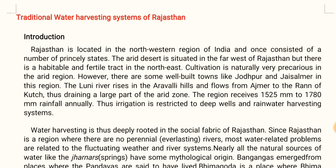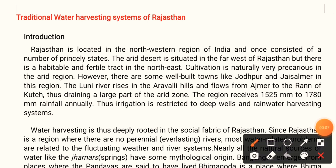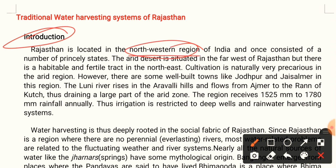Good morning guys and welcome back to the channel. In this video we are going to talk about the traditional water harvesting systems of Rajasthan. Rajasthan is located in the northwestern region of India and once constituted of a number of princely states. The Thar desert is situated in the far west of Rajasthan but there is a habitable and fertile tract in the northeast.